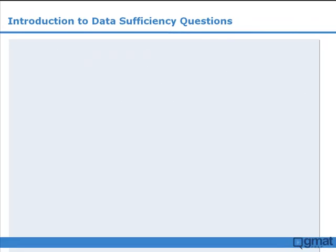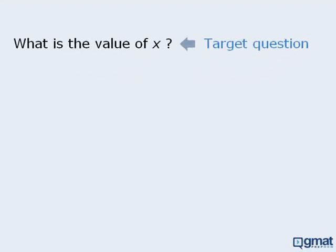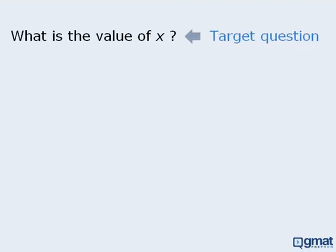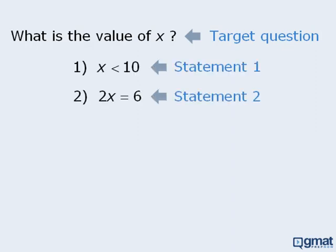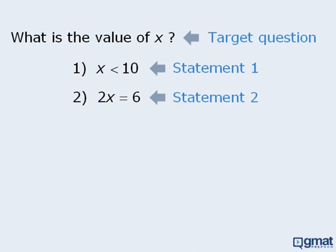Let's take a look at a typical data sufficiency question. First we have a target question. The target question on its own will never contain enough information to answer. In this particular case, it's obvious that we cannot say what the value of x is, since we have no information. Next we have two statements — statement 1 and statement 2. These statements may or may not provide the information required to answer the target question.